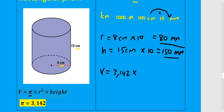Multiply by the radius, and the radius in this case is 80, so 80 millimeters squared. Don't forget the square. Multiply by the height, and the height is 150 millimeters.